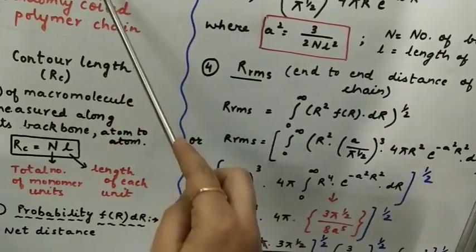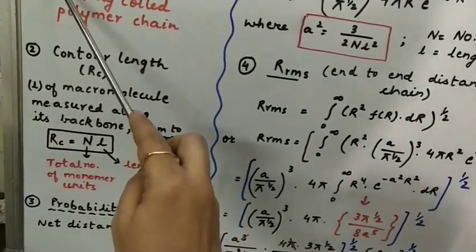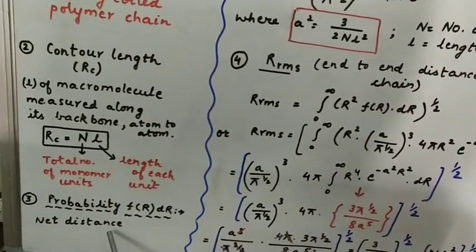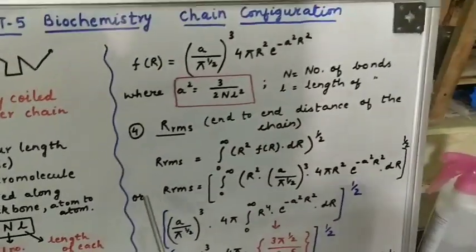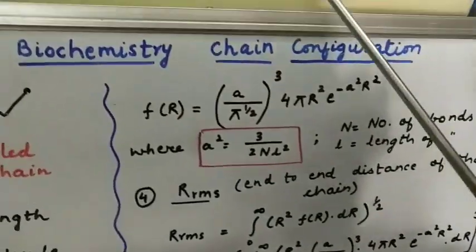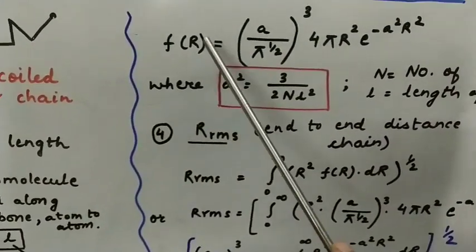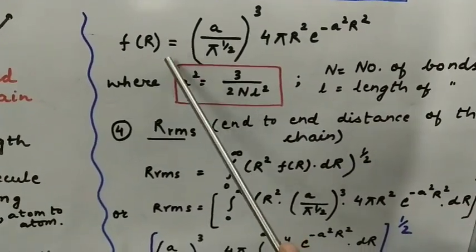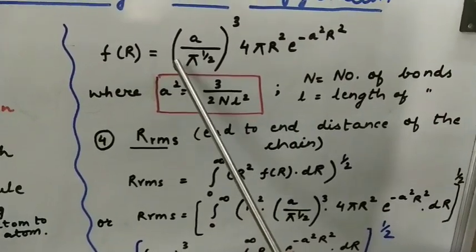You can find here we are talking about the net distance that is from here to finally this. In the last one, we were going through atom to atom and here we are going from this one to this one. That is the net distance.